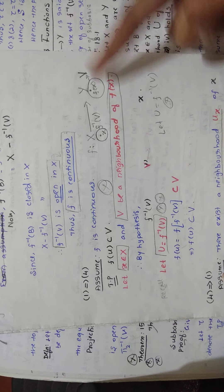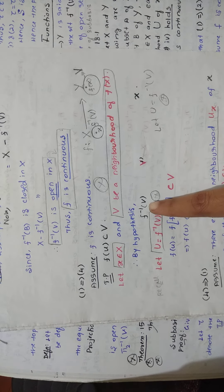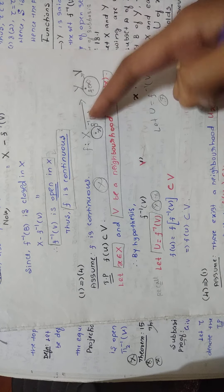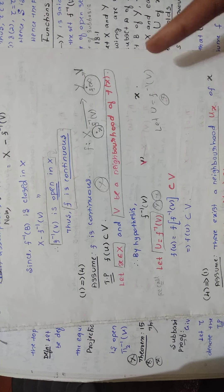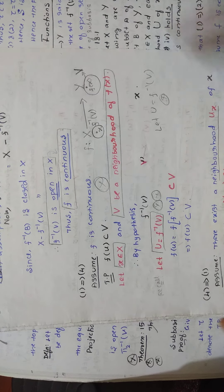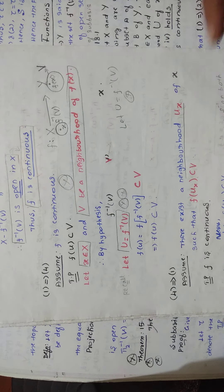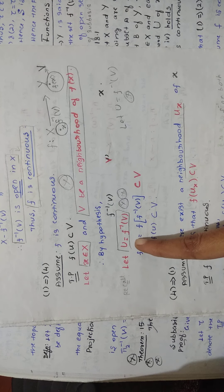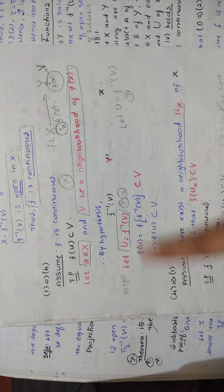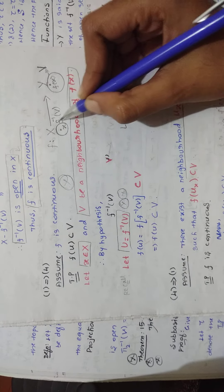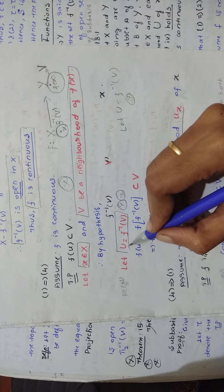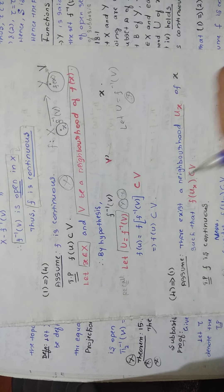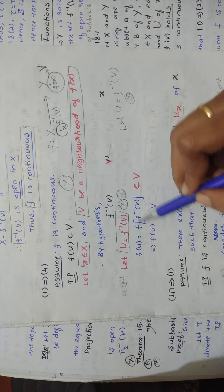So let x belong to capital X and let V be a neighborhood of f(x). Then by our assumption, f-inverse of V is a neighborhood of x. Note that neighborhood and open set are the same here — every neighborhood is an open set. So let U equal f-inverse of V; you are denoting f-inverse of V by U.